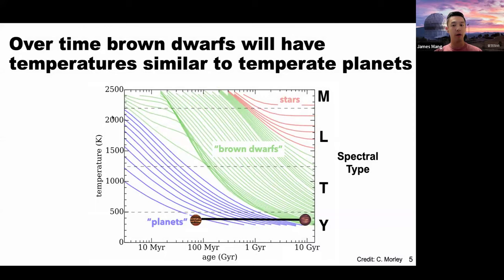Looking at an evolutionary diagram showing temperature on the y-axis and age on the x-axis, from lower-mass planets in blue up to higher-mass stars in red — stars are large enough to fuse, but brown dwarfs and planets cool over time through different temperature regimes and spectral classes. There's an age-mass degeneracy here. A young 70-million-year-old object could be a temperate giant exoplanet, but an older field-age Y-dwarf can share the exact same effective temperature, so their spectral features will actually look very similar.